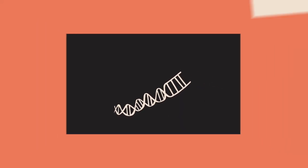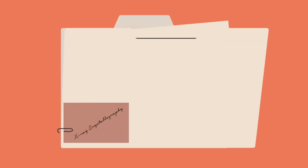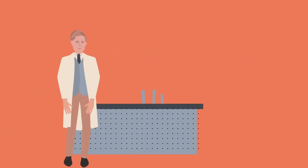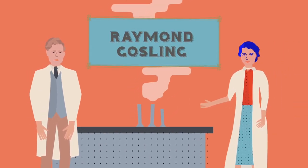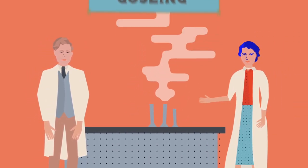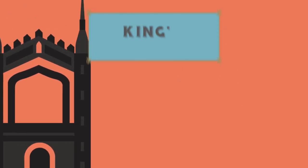Fearing someone would see the work before it was ready, Rosalind kept her discovery to herself, with the exception of one man, Raymond Gosling. The two were partners and worked together to study these new rays, eventually being asked to present at King's College in London.